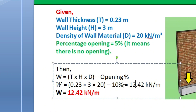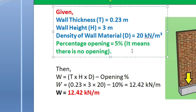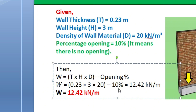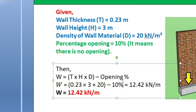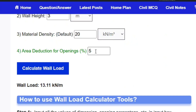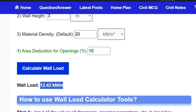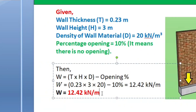We need to make sure the opening percentage is consistent — using 10 percent in both the manual calculation and the calculator. I am changing the percentage opening to 10 percent in the calculator and clicking calculate. You will get 12.42 kilonewton per meter — the same result as our manual calculation.